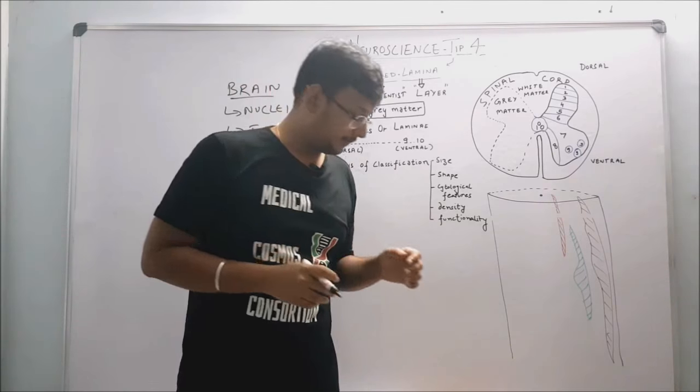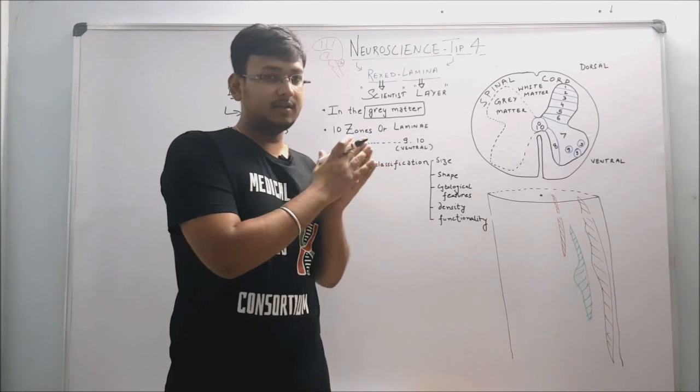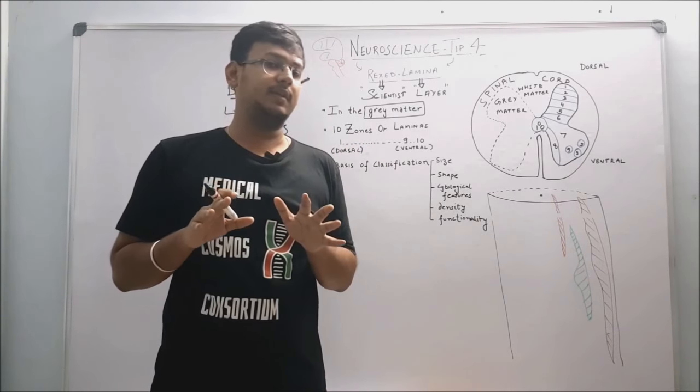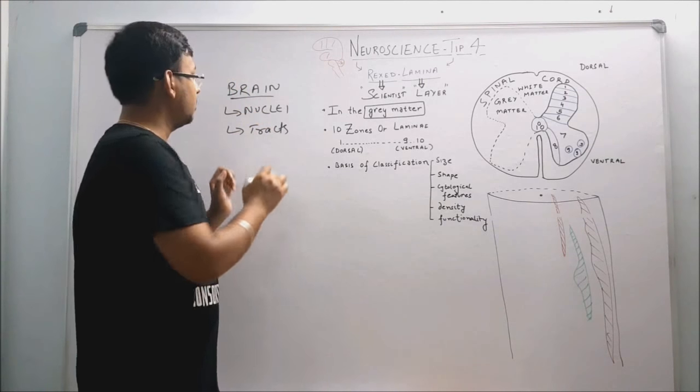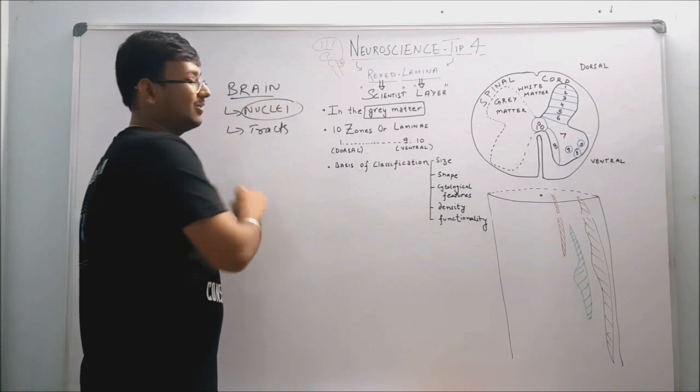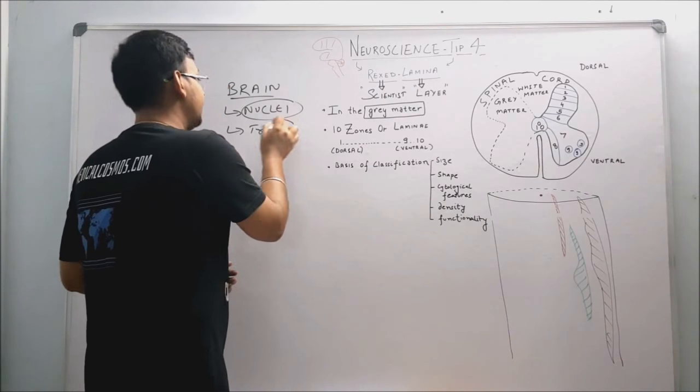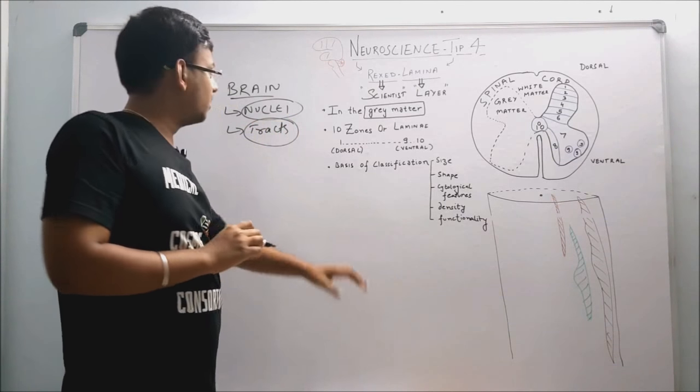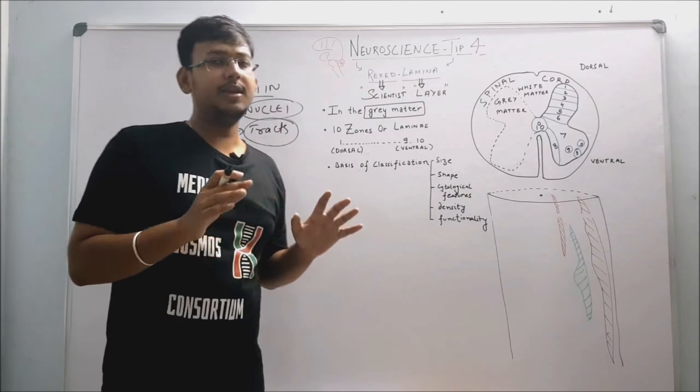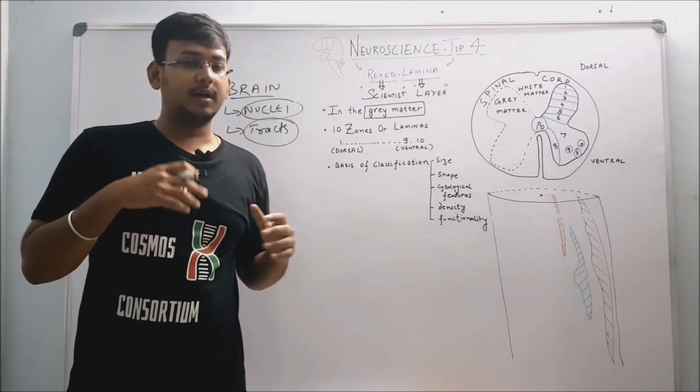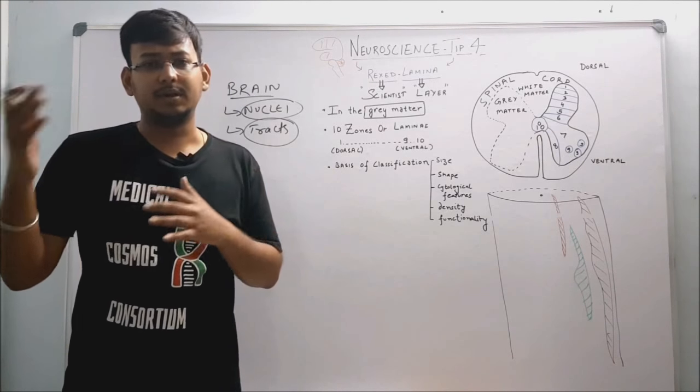Now we have brain. In brain you would have discussed about the nuclei - we know about Rexed also. For example, in basal nuclei we have many arrangements of cell bodies like putamen, globus pallidus, and so forth.